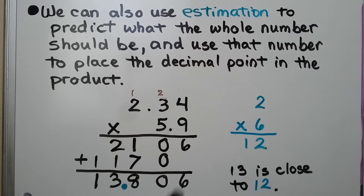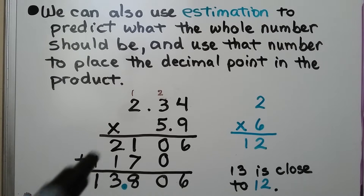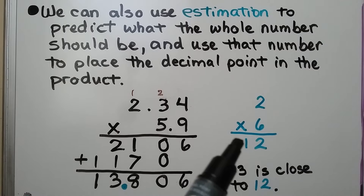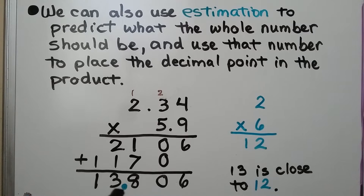Now we add them. We drop down the 6, we have a 0, 7 and 1 is 8, 2 and 1 is 3, and we drop down the 1. We know that the whole number should be close to 12. And if we put the decimal point here at 13, that is close to 12 — that must be where the decimal point goes. So we used estimation to the nearest whole number to help us place the decimal point.